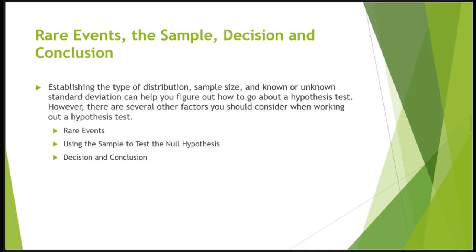The last part is the decision and conclusion. A systematic way to decide whether to reject or not reject the null hypothesis is to compare the p-value to a preset alpha, called the significance level. A preset alpha is the probability of a Type I error — rejecting the null hypothesis when it is actually true — and it may or may not be given at the start of the problem. If alpha is greater than the p-value, we reject the null hypothesis. The results are significant, and there is sufficient evidence to conclude the null hypothesis is incorrect and the alternative hypothesis may be correct.